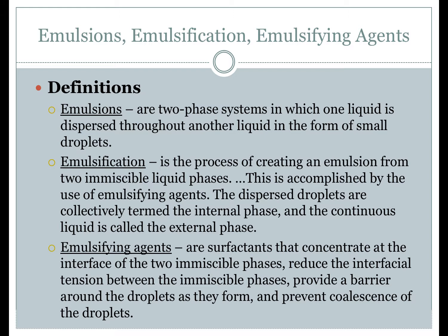A problem occurs when we need to compound a product and disperse one immiscible liquid within the other. The answer is to formulate an emulsion. Emulsions are defined as two-phase systems in which one liquid is dispersed — not solubilized — but dispersed throughout another liquid in the form of small droplets. Emulsification is the process of creating an emulsion from two immiscible liquid phases through the addition of emulsifying agents, which are surfactants that concentrate at the interface, reduce interfacial tension, and provide a barrier around droplets to prevent coalescence.